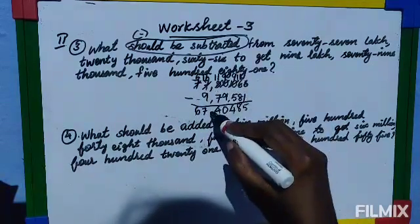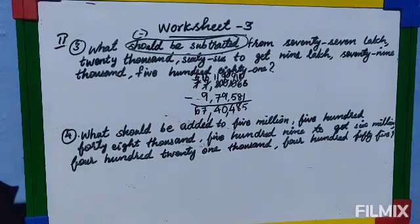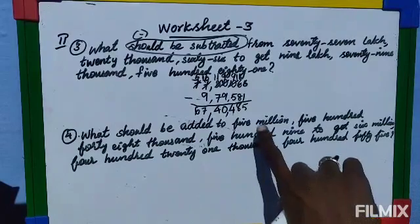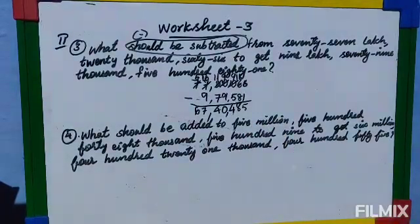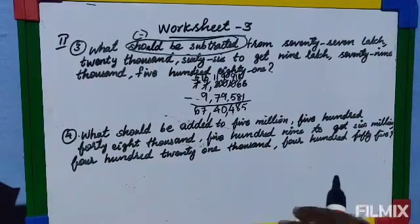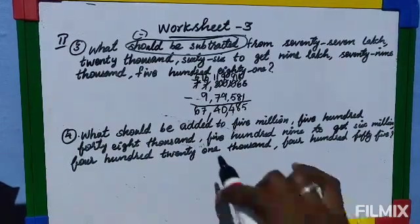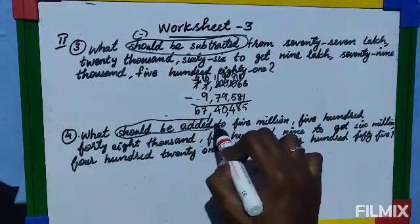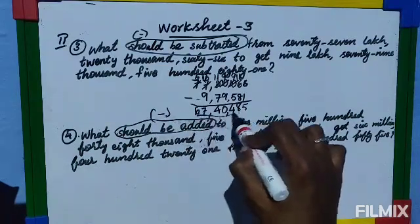The answer is 67 lakh 40,485. This problem was in the Indian system. The next problem is in the international system: 5 million — when you see 'million' it is the international system. In international system, all periods have three digits. The keyword here is 'should be added', which also indicates subtraction.